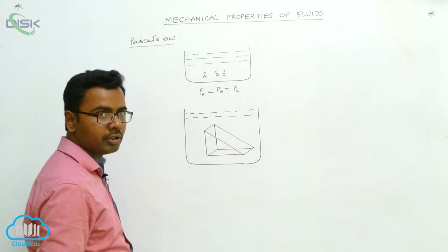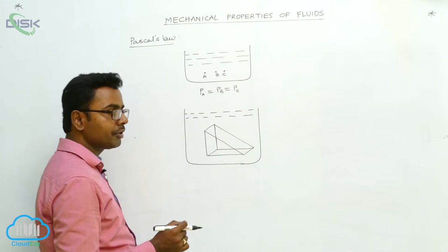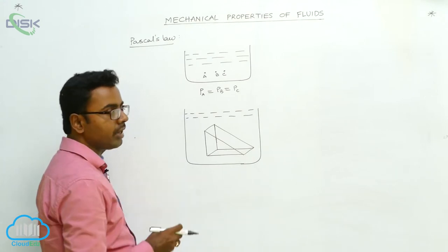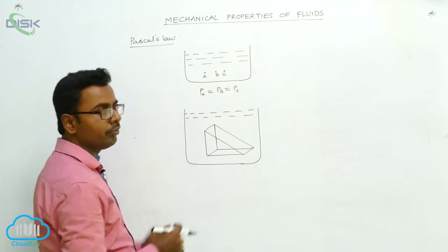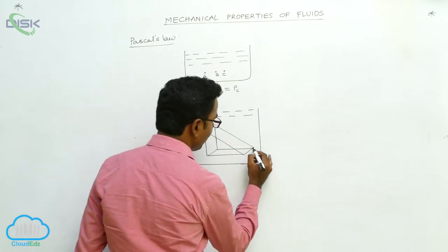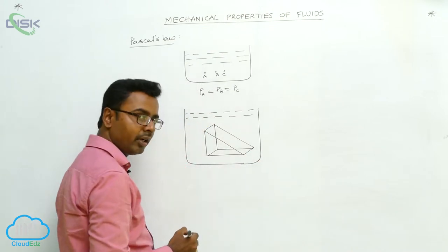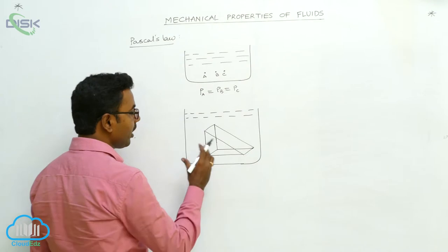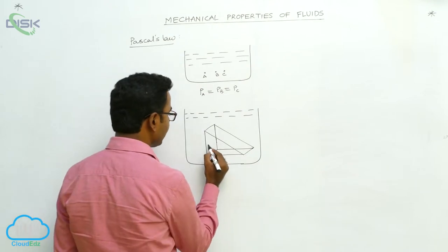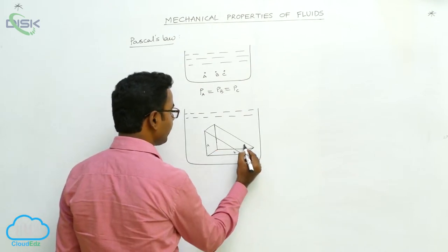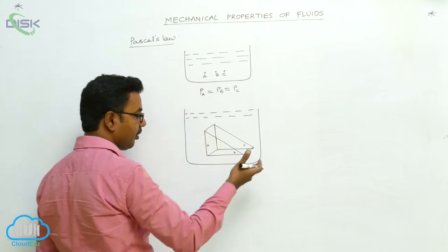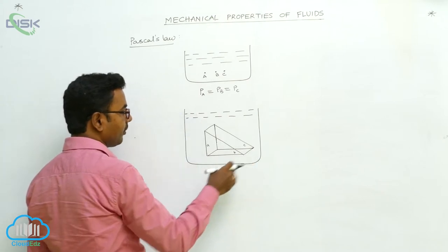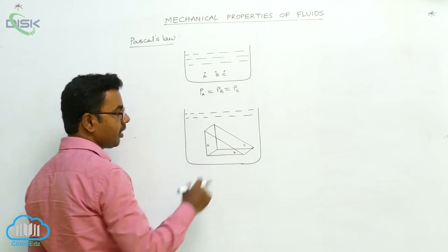Here it is the right-angle prism. We consider this right-angle prism in a very small size, but for our understanding we are picturing it big — to demonstrate Pascal's law clearly, we take this size big. Suppose it has three faces: face A, face B, and face C. Face A is vertical, face B is horizontal, and face C is the inclined face.